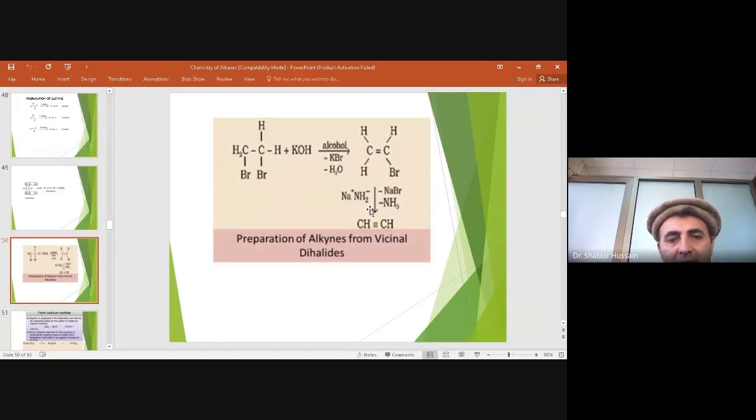The third method is vicinal dihalides treated with alcoholic potassium hydroxide. Then elimination takes place, and as a result we get alkynes.